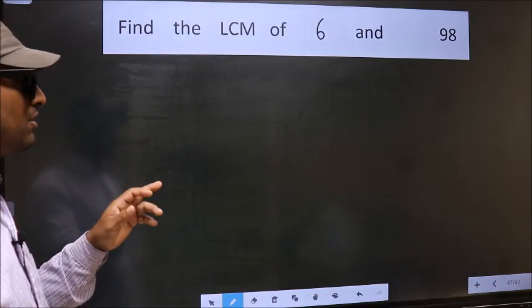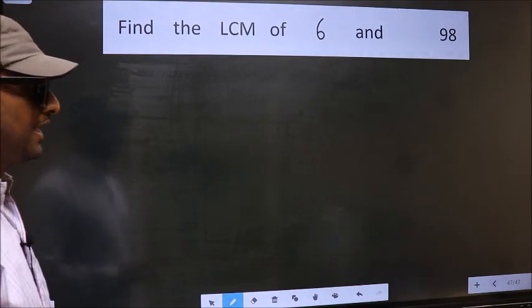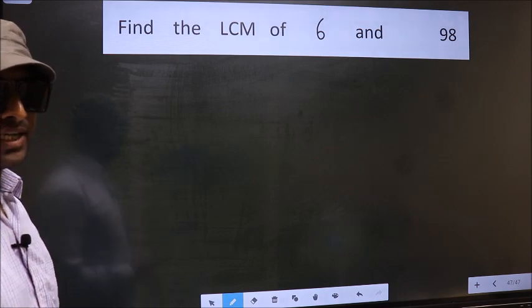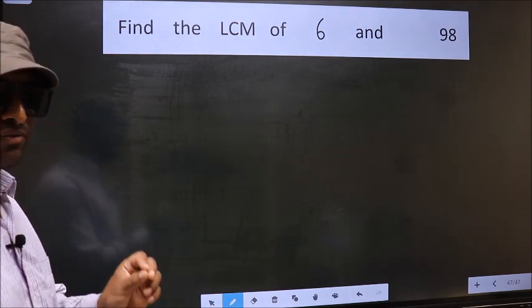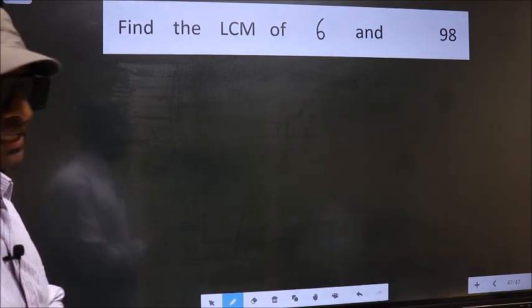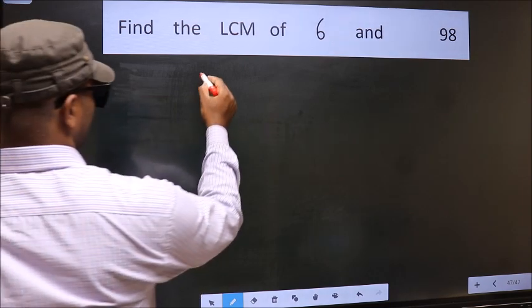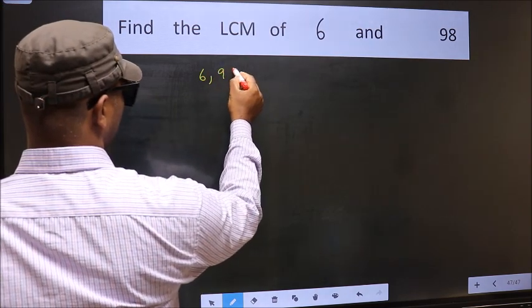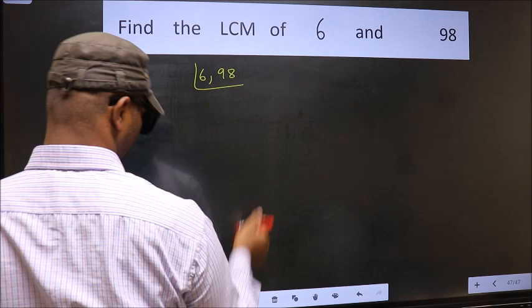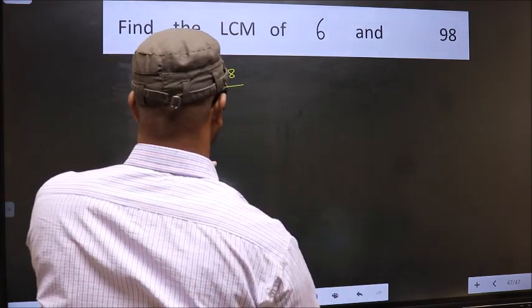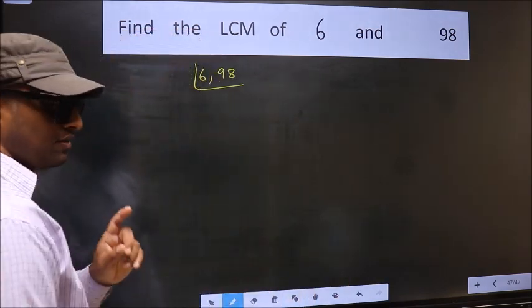Find the LCM of 6 and 98. To find the LCM, first we should frame it in this way. That is 6, 98. This is your step 1.